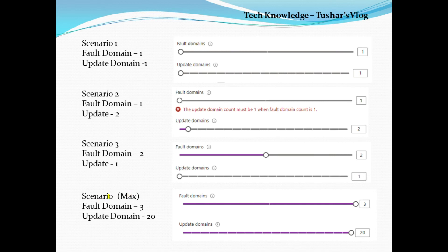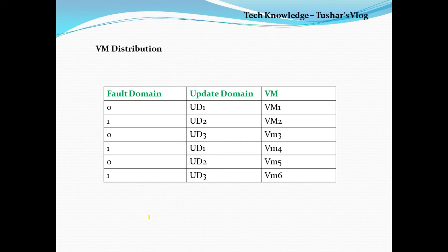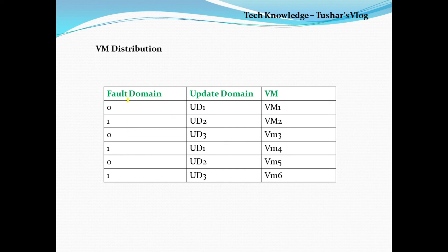The maximum fault domains allowed is three and the maximum update domains allowed is 20. Now let's understand how VMs are distributed across fault domains and update domains. In this example I have two fault domains — FD0 and FD1 — and three update domains — UD1, UD2, and UD3. When I create my first VM it goes to FD0 and UD1. My second VM goes to FD1 and UD2 — both incremented by one. My third VM, since we only have two fault domains, goes back to FD0 and update domain goes to UD3. My fourth VM increments fault domain to FD1, and since the total was three update domains, it goes back to UD1. This cycle continues.